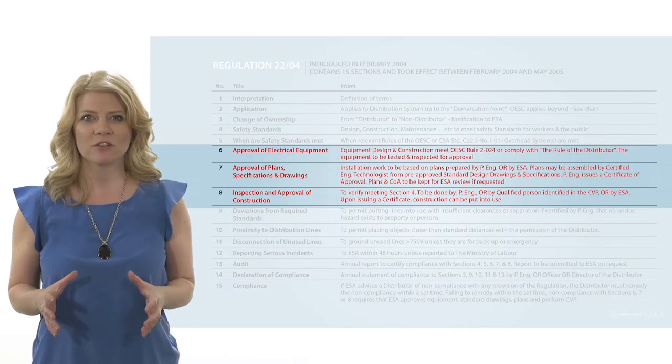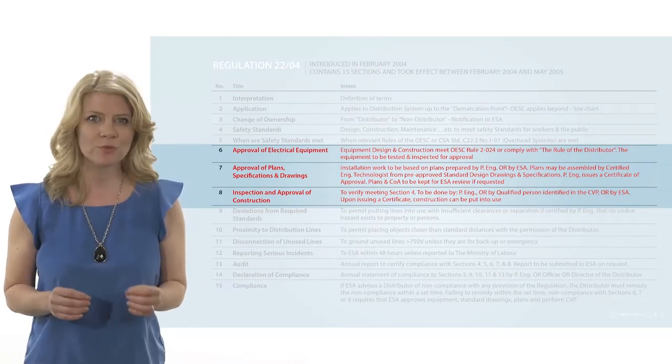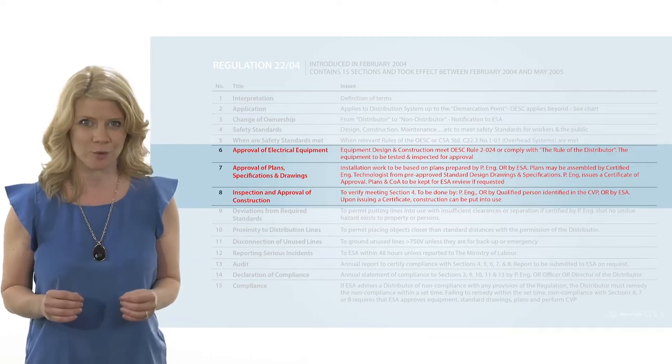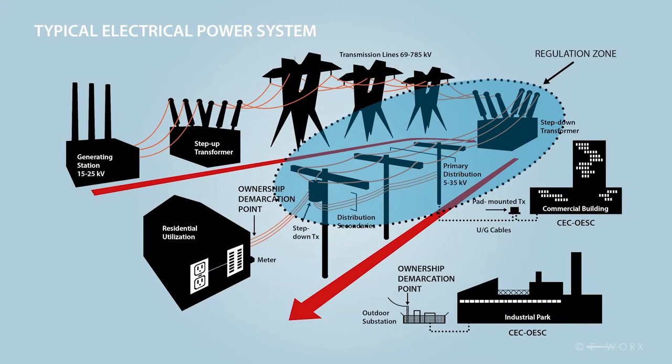A certified engineering technologist can use these pre-approved construction standards to assemble plans for individual projects. The demarcation point is where utility ownership terminates and private ownership starts.